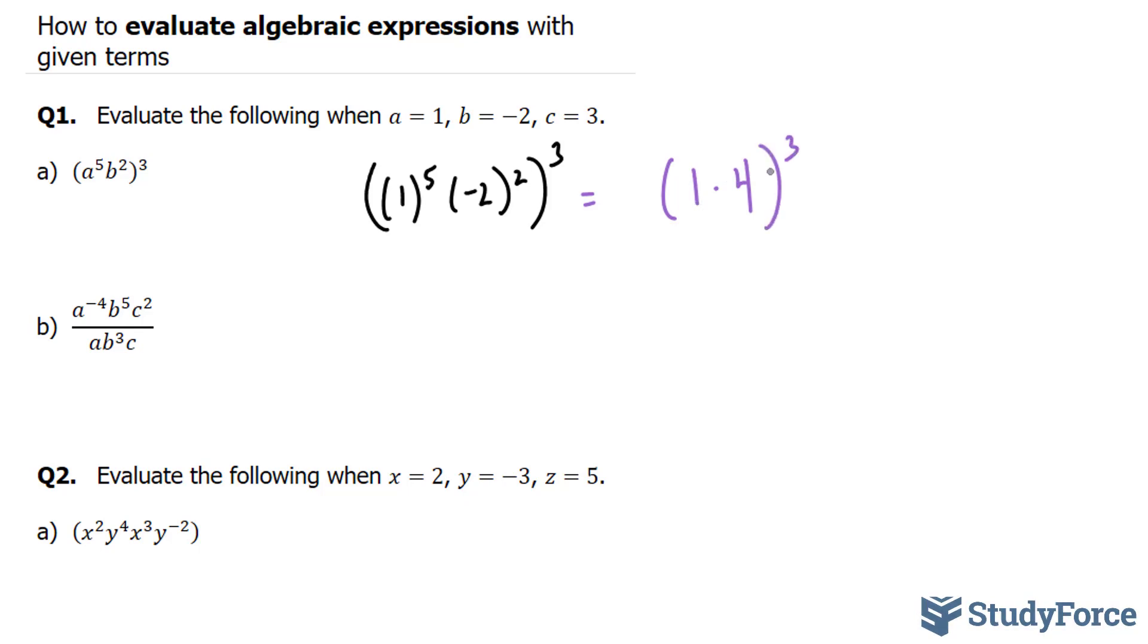We're going to continue with BEDMAS, the order of operations, which tells us that we multiply what's inside the brackets first. 1 times 4 is 4 to the power of 3. That's like saying 4 times 4 times 4, which is equal to 64.